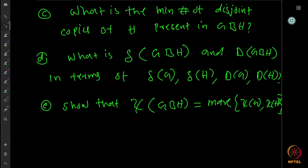Finally, show that the chromatic number of the Cartesian product graph — the minimum number of colors needed so adjacent vertices receive different colors — equals the maximum of the chromatic numbers of the two constituent graphs. So with max(χ(G), χ(H)) colors you can color the product graph. These are immediate questions, not very difficult, and I would like you to work them out as homework.